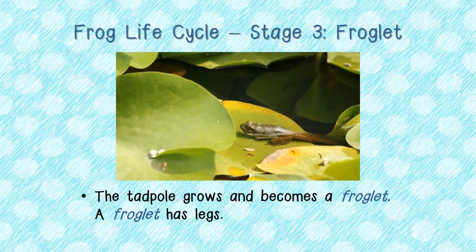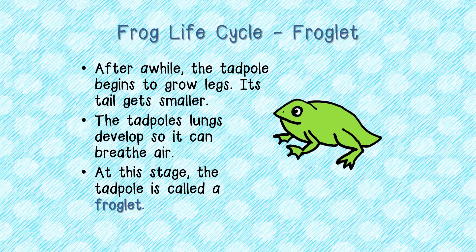Let's go! Today we will be discussing stage 3 of the frog life cycle, and this stage is when the frog is a froglet. The tadpole grows and becomes a froglet. A froglet has legs. After a while, the tadpole begins to grow legs, its tail gets smaller, and the tadpole's lungs develop so it can breathe air. At this stage, the tadpole is called a froglet.